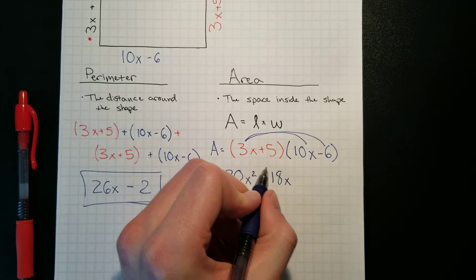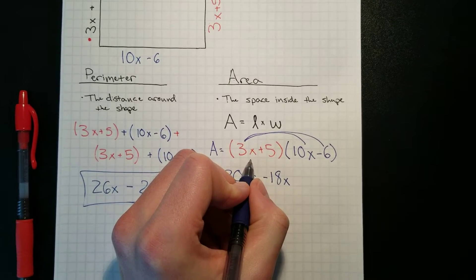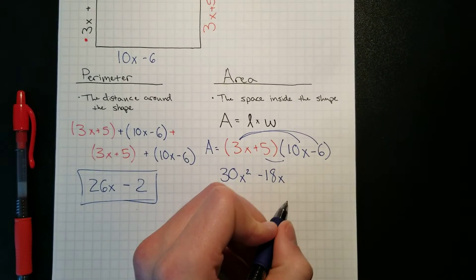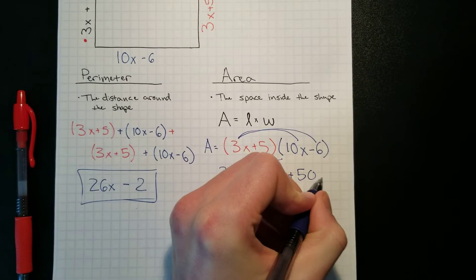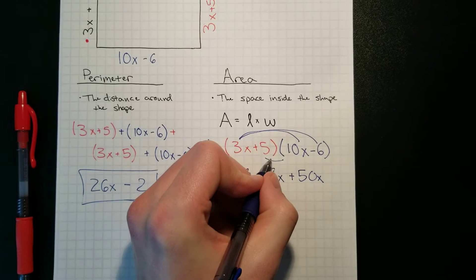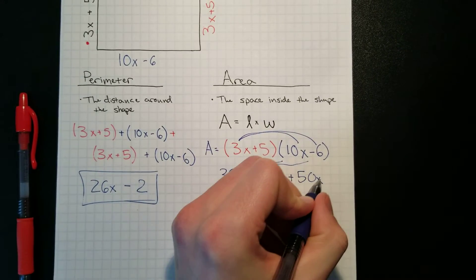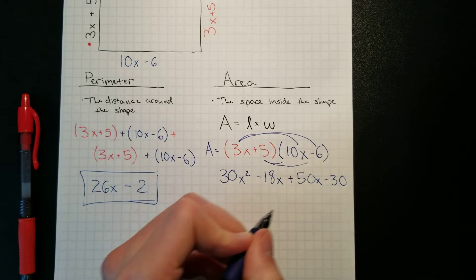And then we're all done multiplying the 3x, so then we move on to the 5. 5 times 10x is positive 50x, and 5 times negative 6 is negative 30.